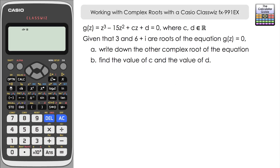Let's take a look at the question. We've got G(Z), a function of Z, which is Z cubed minus 15Z squared plus CZ plus D equals zero, where C and D are members of the set of real numbers, so we know that C and D are both real numbers.